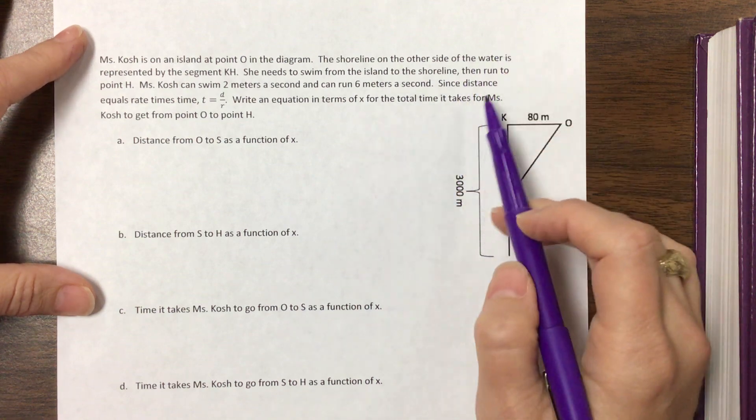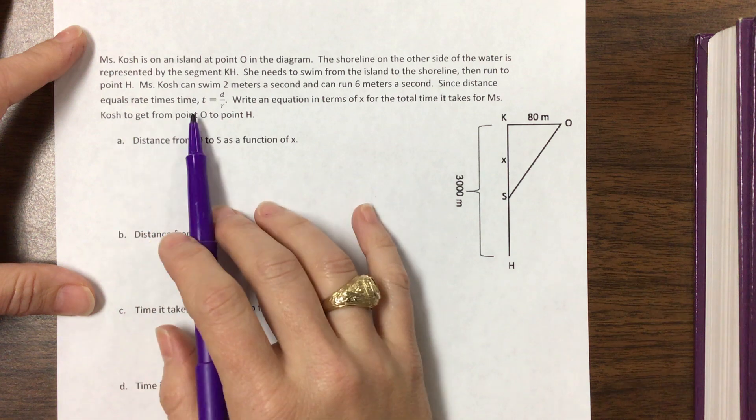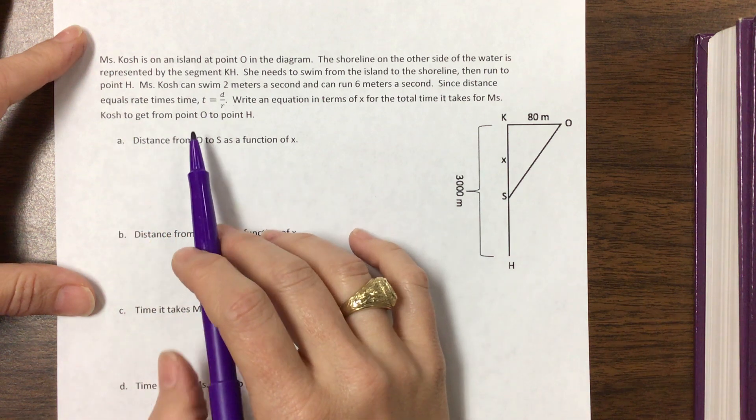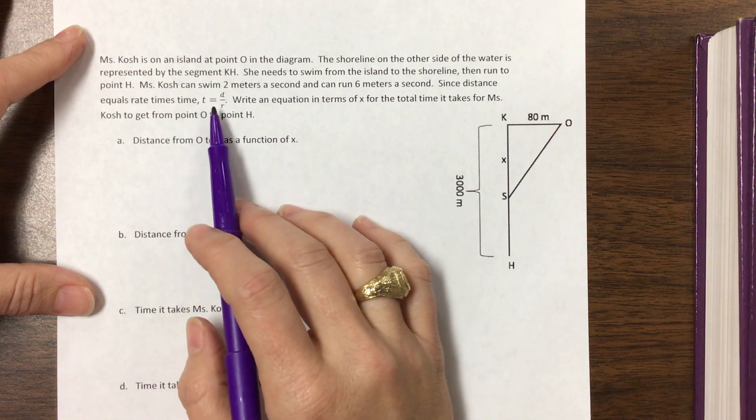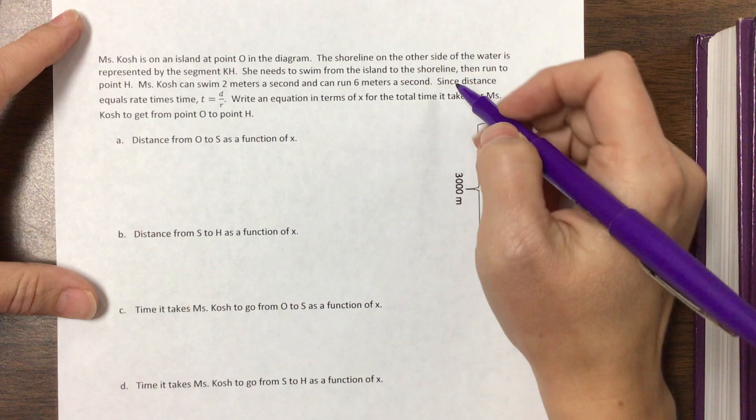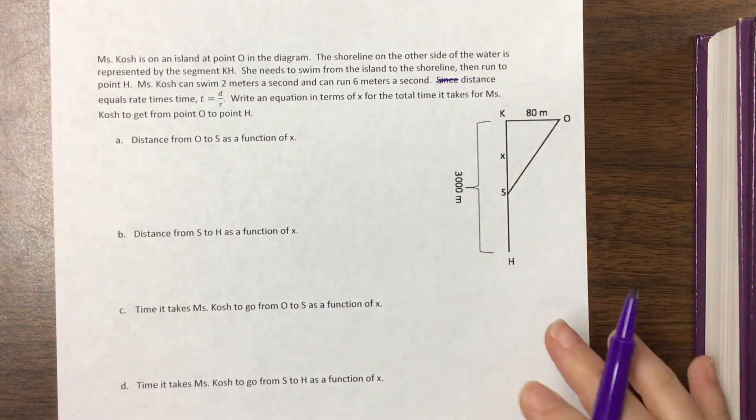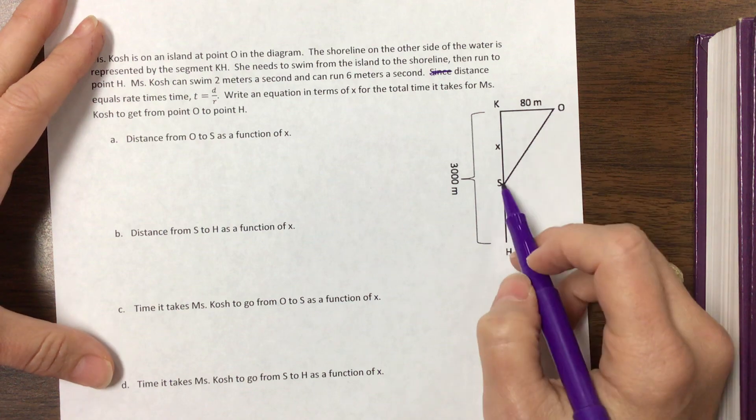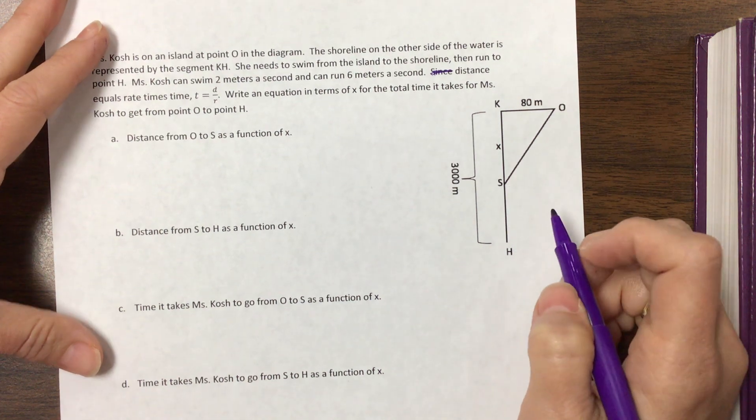But anyway, it says since distance equals rate times time. Well that's not a complete sentence. Since distance equals rate times time, write an equation in terms of... okay so maybe they should have just said distance equals rate times time. Sorry the grammar is bothering me. Okay so basically I'm going to swim and then run the rest of the way.